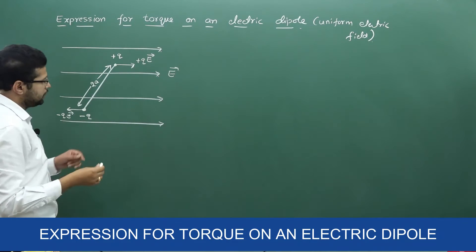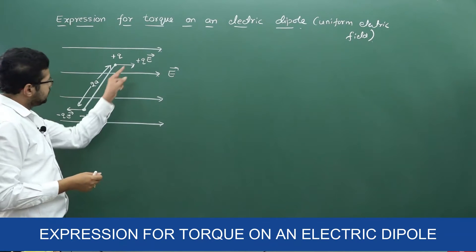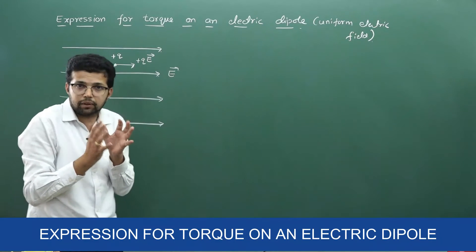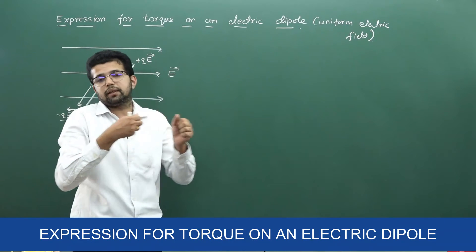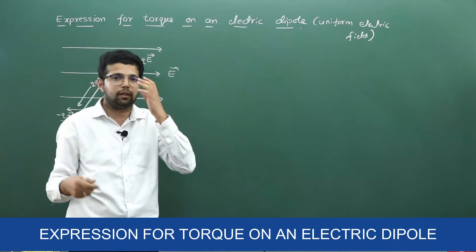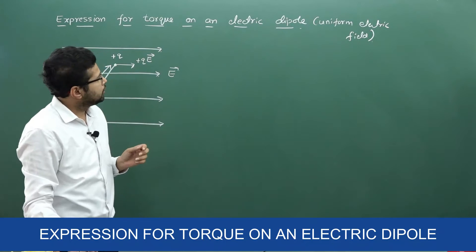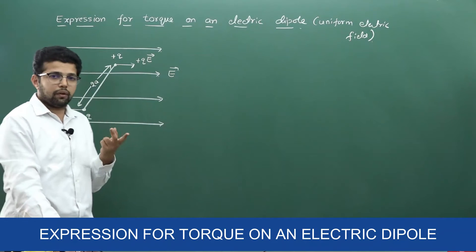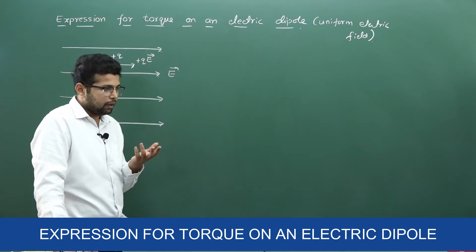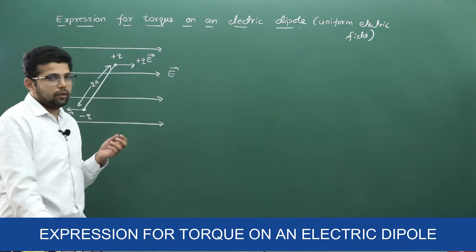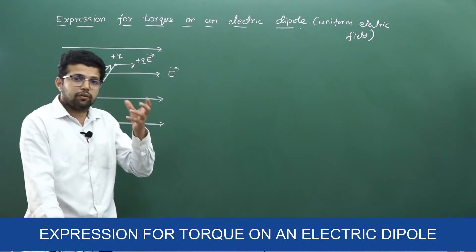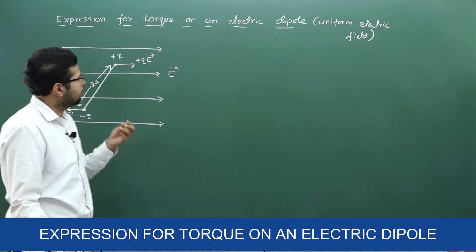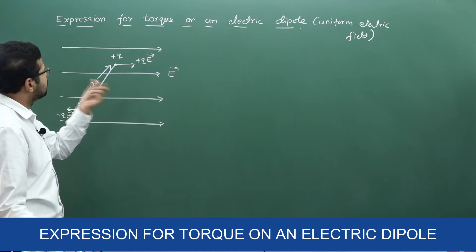What you need to observe is that these two forces are equal in magnitude but acting in opposite directions. We studied in class 11 that if there are two equal and opposite forces acting on different points of a body, they constitute a couple, and there is a torque on it.